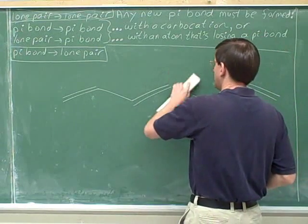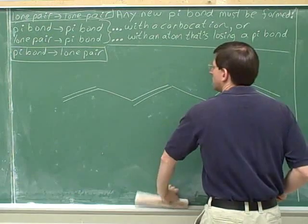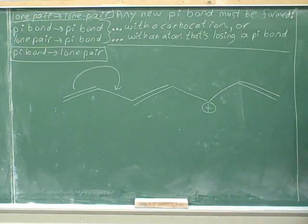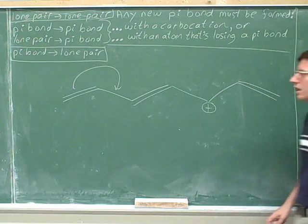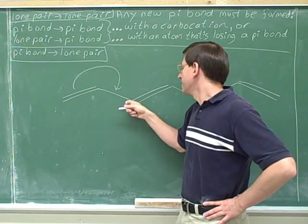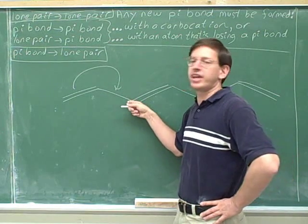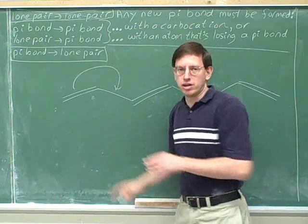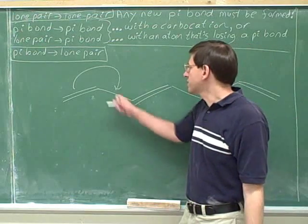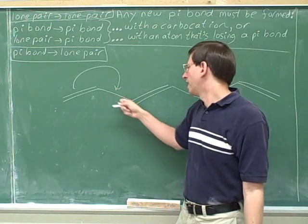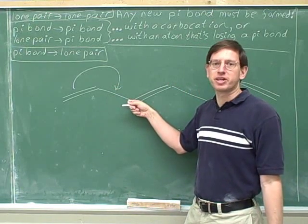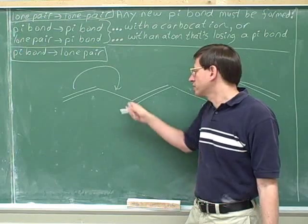Let's try another arrow. Is this legal? Now we're forming a pi bond, and we're not doing it with a carbocation. And this atom that's gaining the pi bond isn't losing any pi bonds. So this is a bad arrow. This is an illegal arrow — illegal if we leave it by itself. This arrow is illegal because this atom here is forming a new pi bond, but it doesn't have room for a new pi bond because it's not a carbocation. How can we make some room?